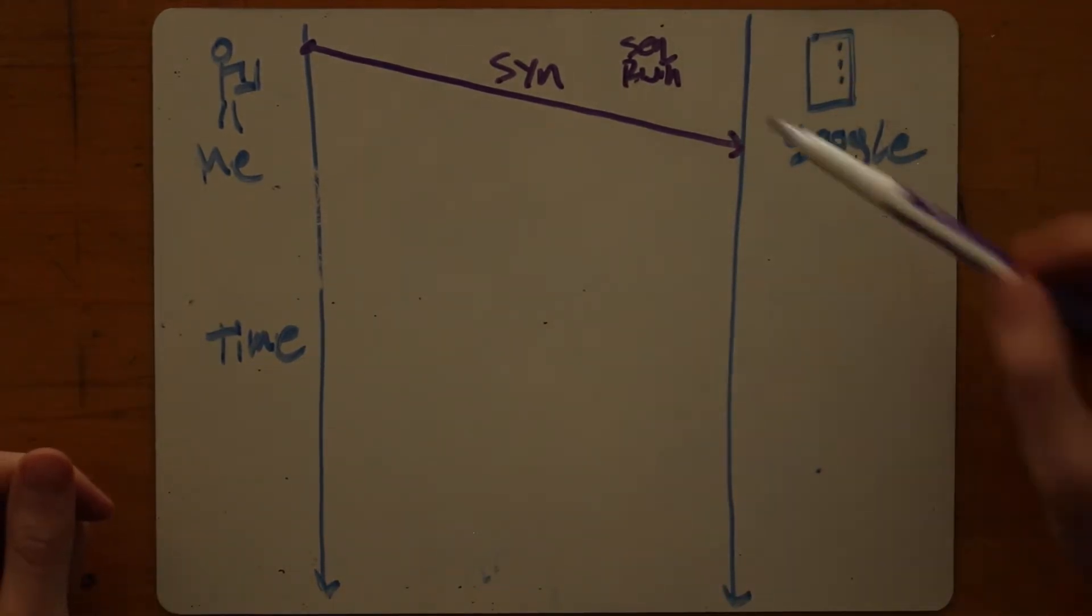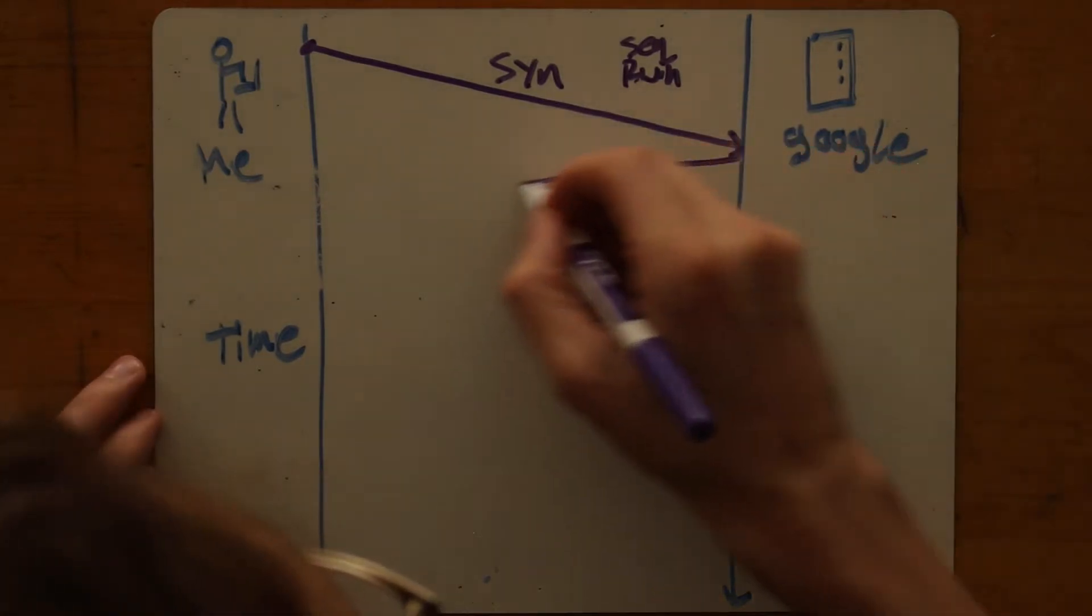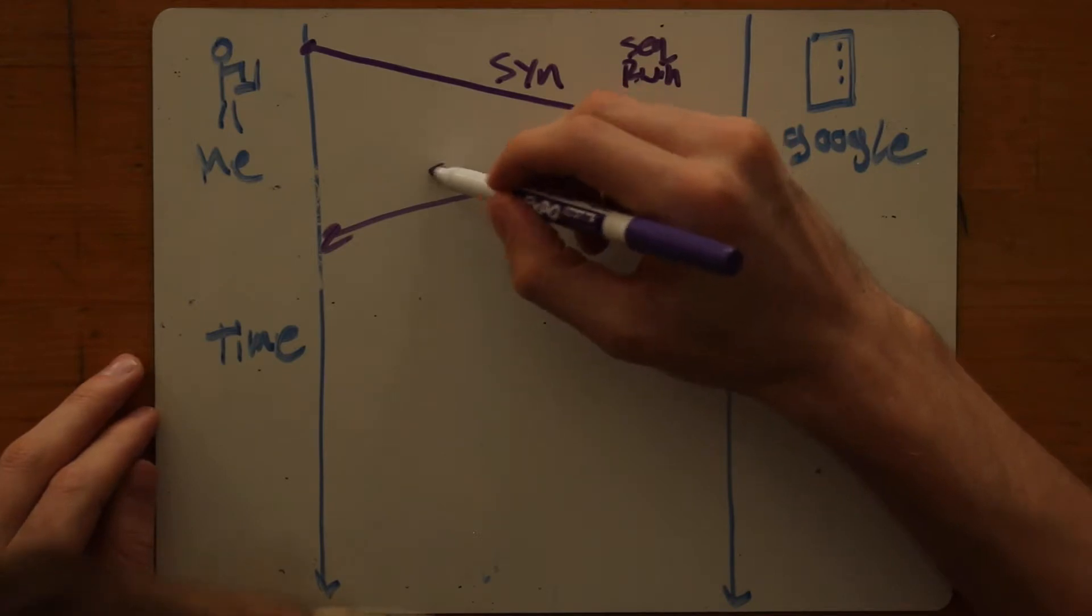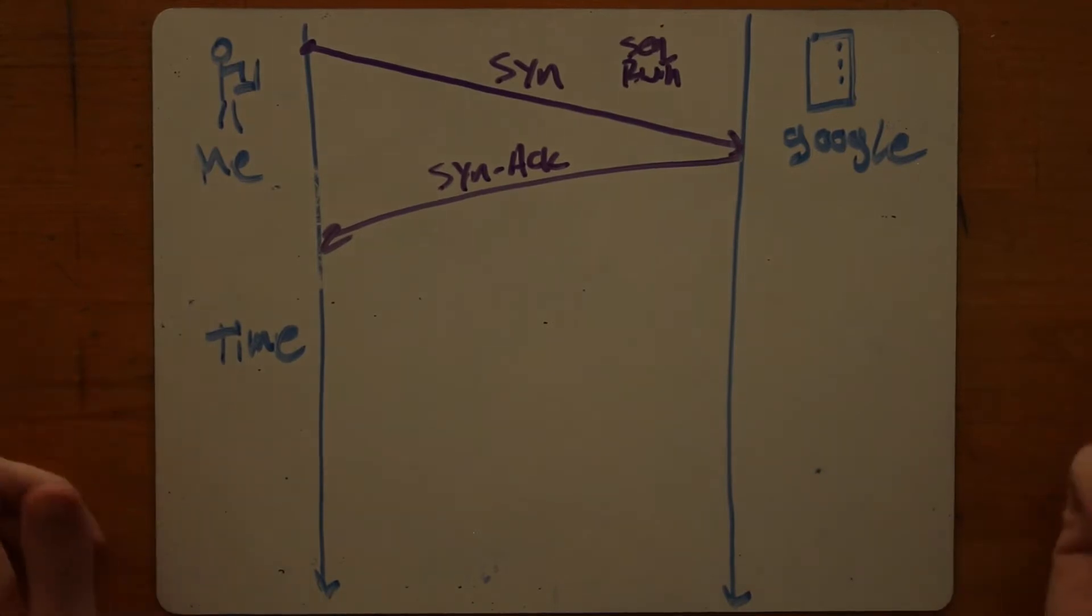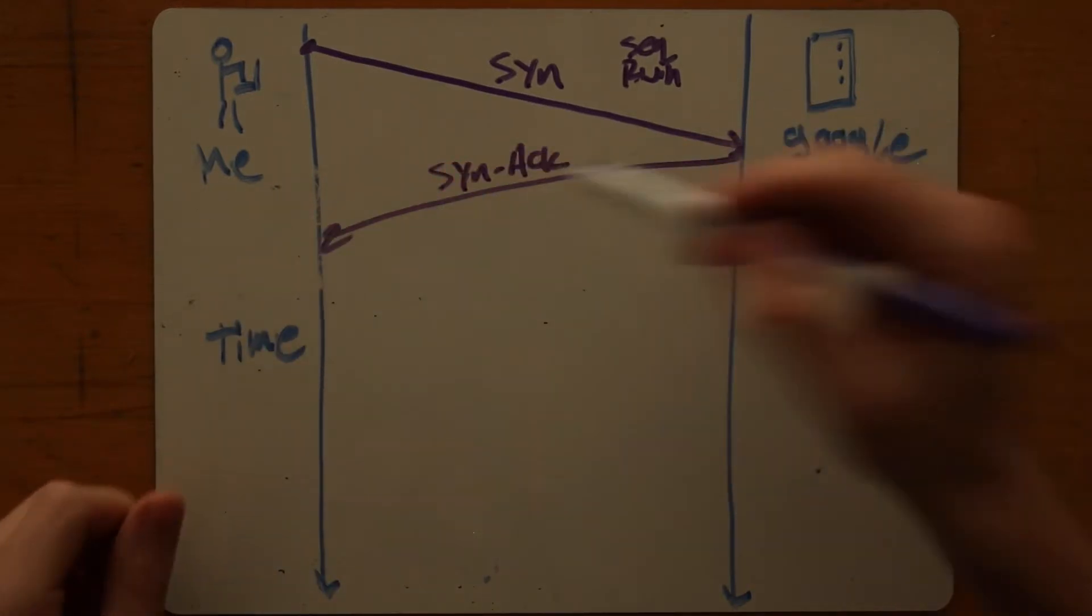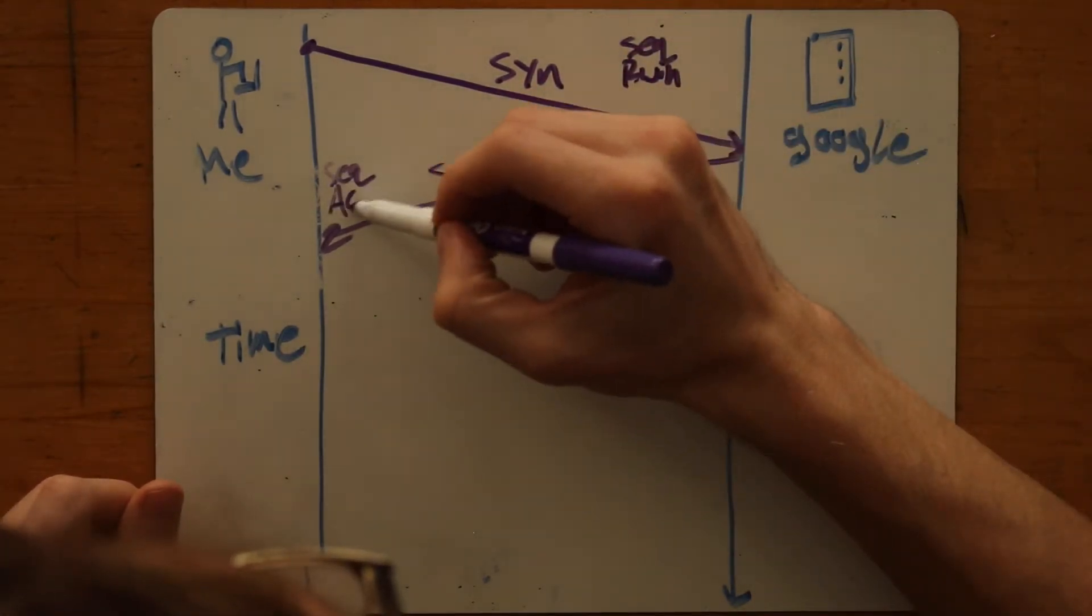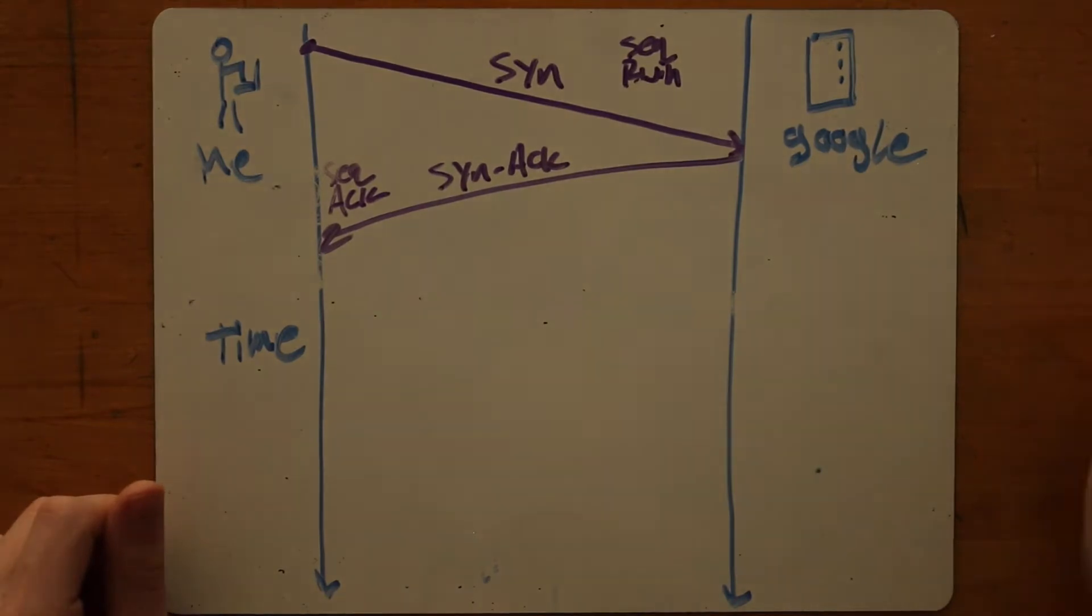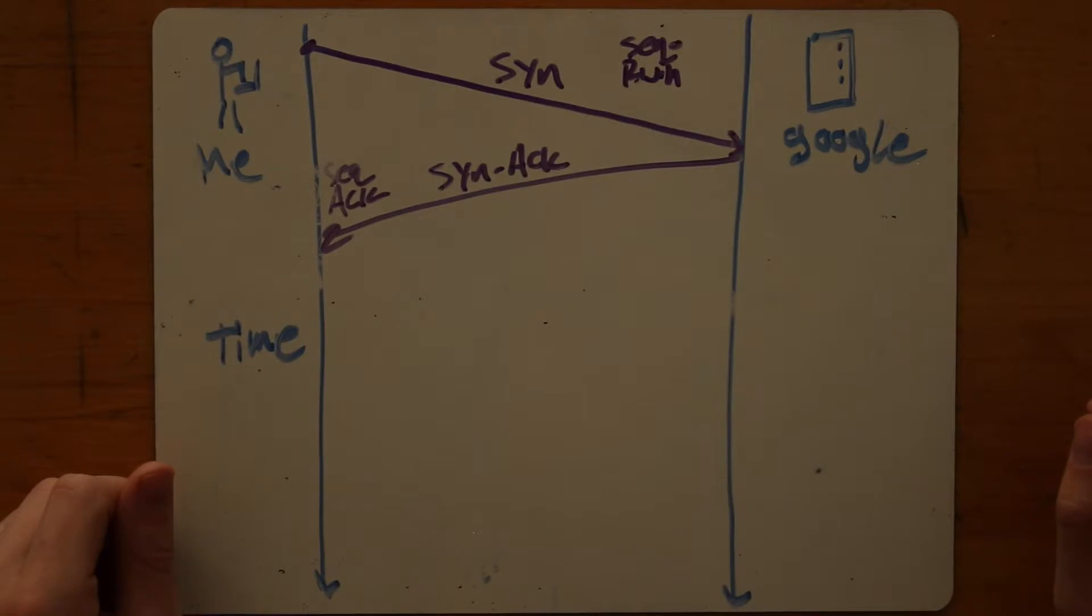Okay, so I send some important starting values about me, including sequence number and a receive window, and then Google sends back what is called the SYN-ACK request, where they acknowledge, okay, great, I accept that you want to communicate with me over TCP, so we'll do that. And they send me their starting sequence number, and they send me an acknowledgement, acknowledging that they've received this sequence here.